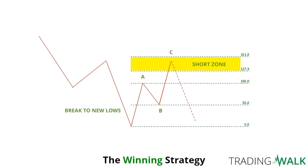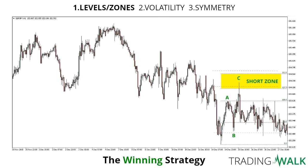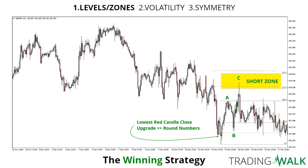Let's look at a real-world example. This is a GBP/JPY chart from the 14th of December. As you can see, we break to new lows and then make a rally up to the A point. We retrace back to the 50% level — and a little more than that — and then we rally up. I have marked out the short zone, and in that short zone we have a level that we want to act on. For this strategy, you're going to enter on the last green candle open price — the last swing before we broke down. This is the red dotted line I have marked out. That's where we put our limit order. When we are filled, we look for an area to take profits, and we want to take profits at the lowest red candle close in this first rally from the low to the A point.